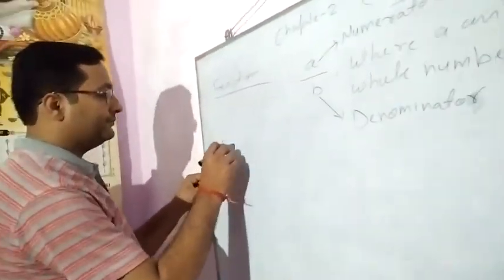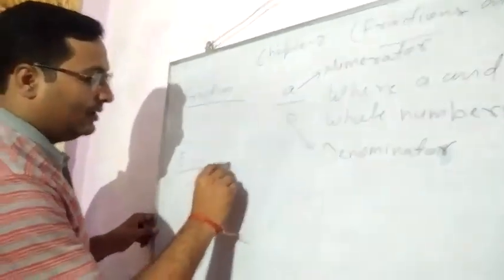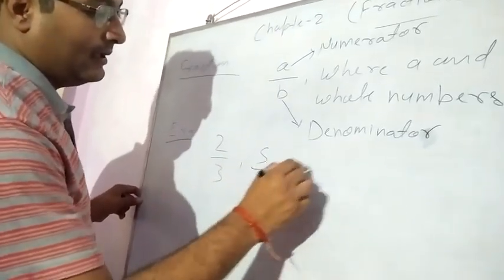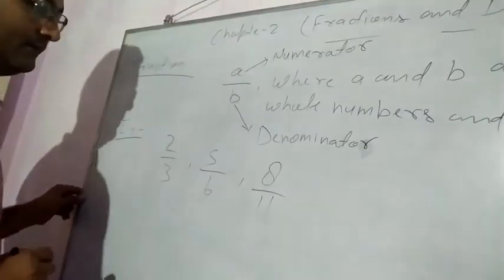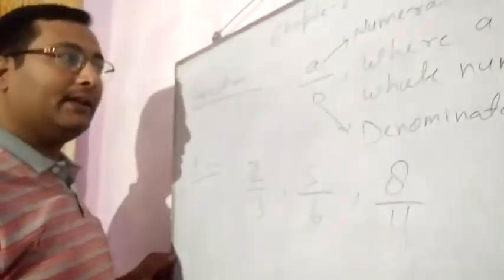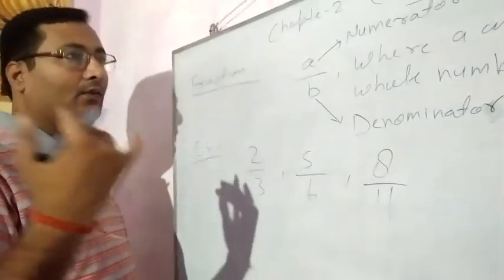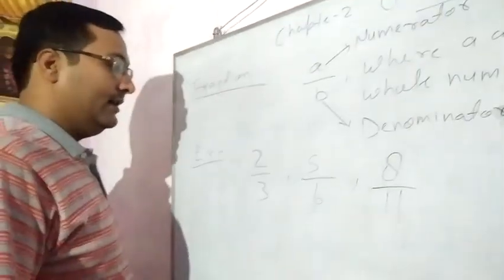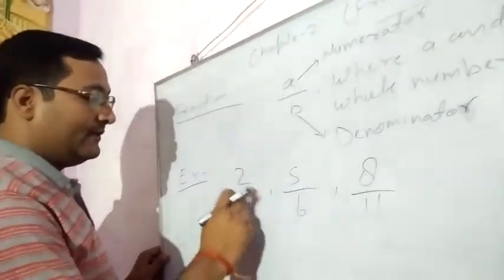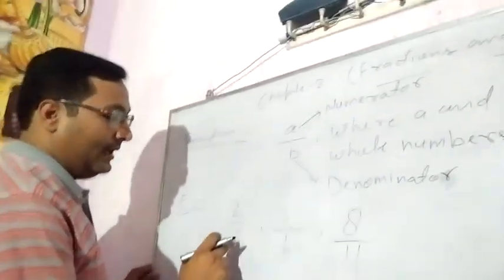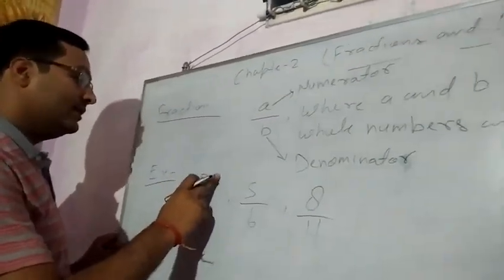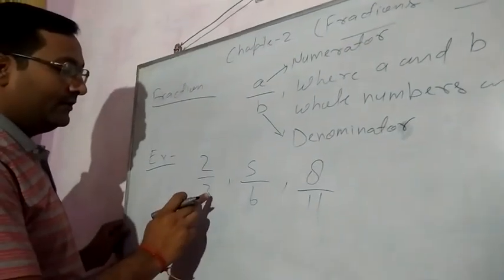For example, if we write 2 by 3, 5 by 6, 8 by 11 — check it: 2 and 3. 2 is a whole number. Whole numbers start from 0 to infinite: 0, 1, 2, 3, 4, 5, and so on. So 2 is a whole number, 3 is a whole number, 5 is a whole number, 6 is a whole number, and B is not equal to 0, meaning the denominator is not equal to 0. So the numerator of 2 by 3 is 2, and the denominator of 2 by 3 is 3.